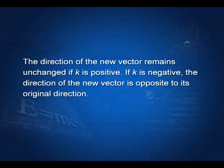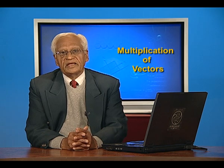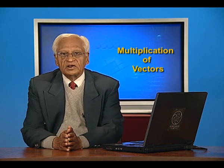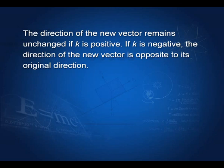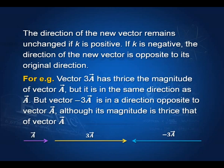The direction of the new vector remains unchanged if k is positive. That is, if I multiply a vector by a positive quantity, its magnitude increases but the direction remains the same. If k is negative, the direction of the new vector is opposite to its original direction. For example, vector 3a has thrice the magnitude of vector a and is in the same direction, but vector −3a is in a direction opposite to vector a, although its magnitude is thrice that of vector a.